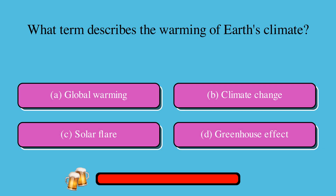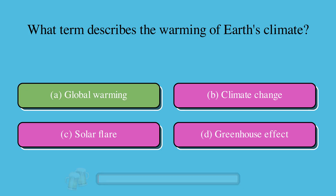What term describes the warming of Earth's climate? A. Global warming, B. Climate change, C. Solar flare, or D. Greenhouse effect? The correct answer is A. Global warming.